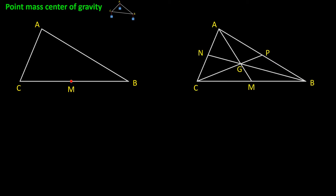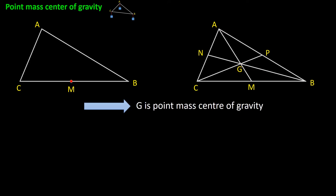The same way, we can say that the center of gravity of the total triangle will be along the median that comes from vertex C, and also along the median that comes from vertex B. The only point that fulfills all these conditions is the intersection of the three medians. So G, which is the intersection of medians, is the point mass center of gravity of the triangle.